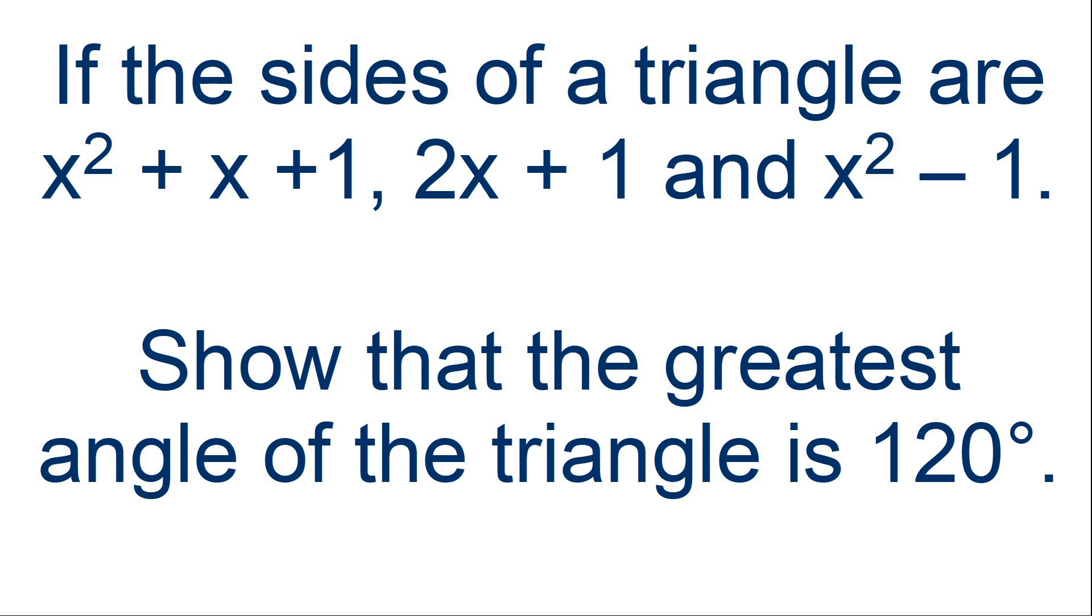If the sides of a triangle are x squared plus x plus 1, 2x plus 1, and x squared minus 1, show that the greatest angle of the triangle is 120 degrees.